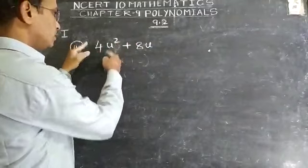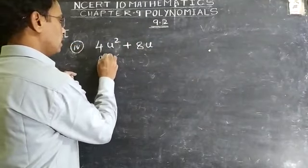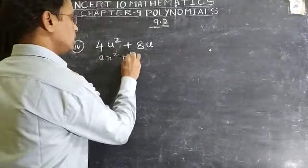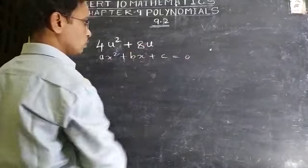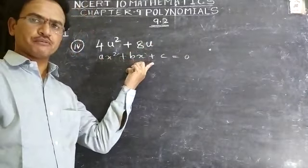Now we will take the first term. ax² + bx + c = 0. You know that this is a quadratic equation.